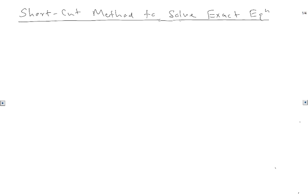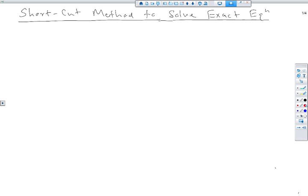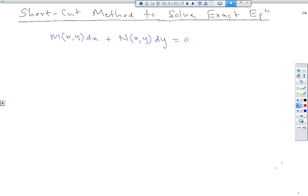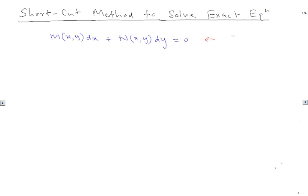So what is an exact equation? We can write an exact equation in this form: M(x,y)dx + N(x,y)dy = 0. This is the standard form — what we normally call the standard form.